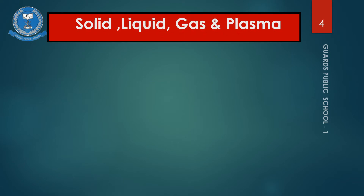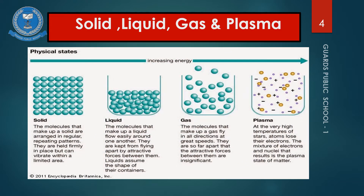Up till now we have read about the three basic states of matter: solid, liquid, and gas. But now a fourth state of matter, known as plasma, has been discovered. Plasma is a mixture of negative and positive charges. It is formed by heating at very high temperature, where most atoms lose their electrons and become positive nuclei. This mixture of electrons (negative charge) and nuclei (positive charge) is known as plasma — the fourth state of matter.